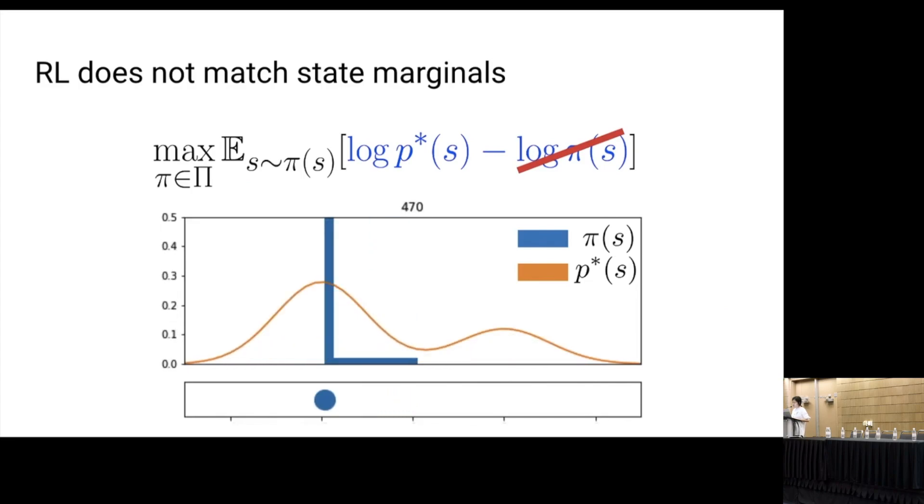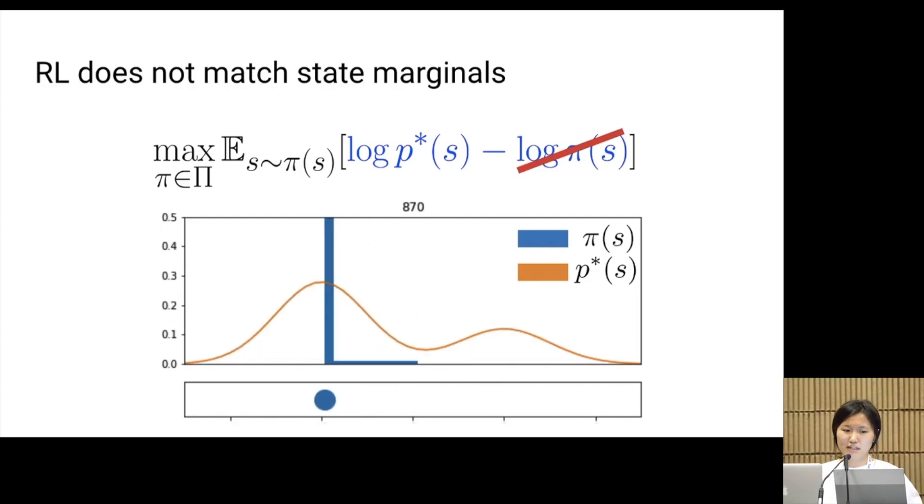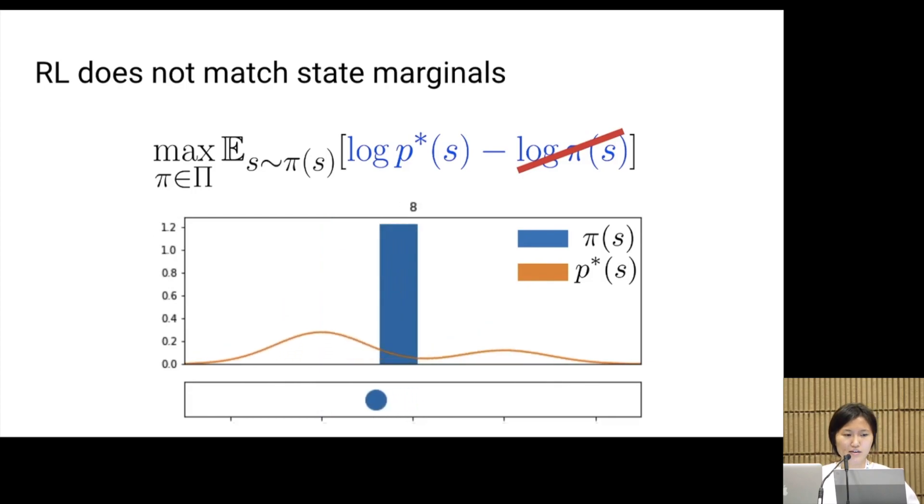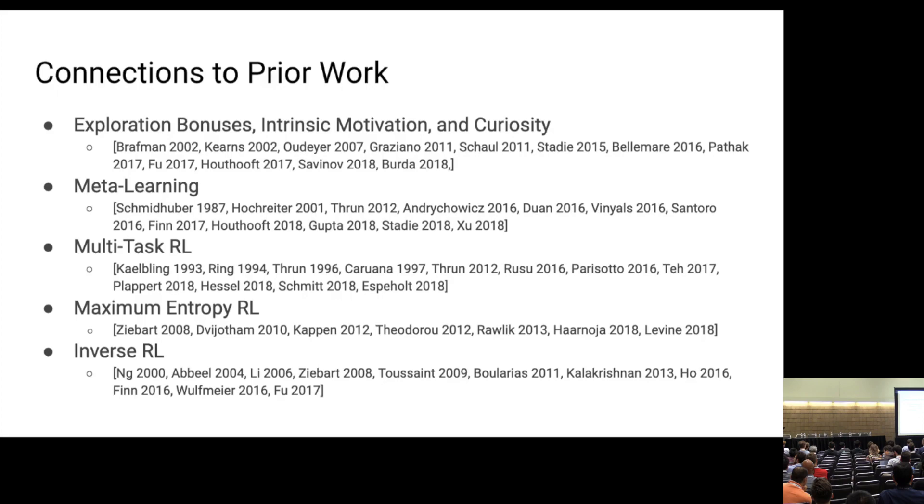Lastly, we emphasize that RL does not do state marginal matching. Instead, it will go to the mode of the target distribution. We note that maximum entropy RL, which matches distribution over trajectories, also suffers from this mode collapse problem. Next, Ben will talk about connections to prior work and experimental results.